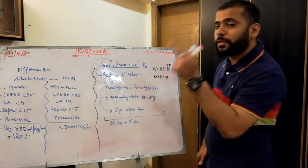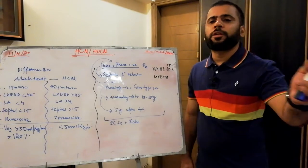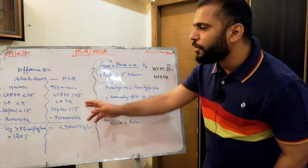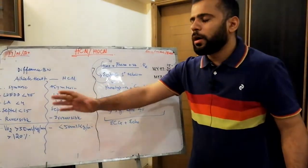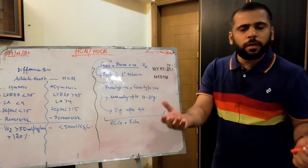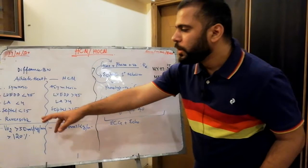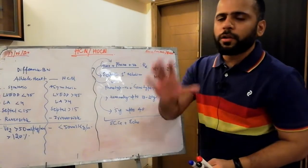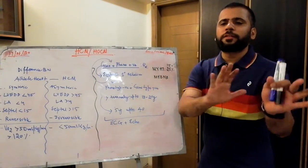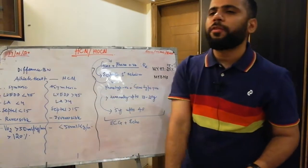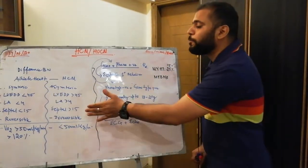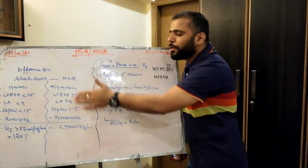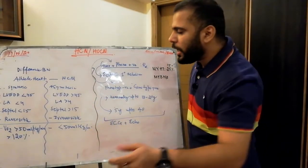Increased LA pressure leads to increased LA volume, which raises pulmonary capillary wedge pressure and causes heart failure — athletes do not develop heart failure from athlete's heart. Septal thickness less than 15 mm suggests athlete's heart; greater than 15 mm requires ruling out HCM. The normal septal thickness is 11 mm, so 11 to 15 mm is a grey zone. If a patient is an athlete with septal thickness over 15 mm, you must rule out HCM.